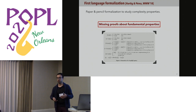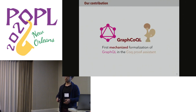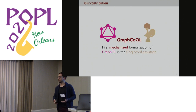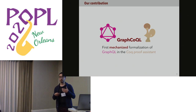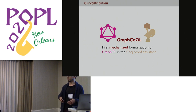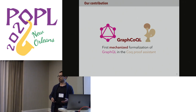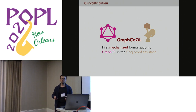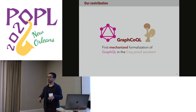So we wanted to address these issues, and we developed the first mechanization of GraphQL in Coq, which we hope can serve as a baseline to study the language formally and to provide support for verification efforts on this language. I will briefly show a little bit of the core of our formalization, and then show a case scenario where we use it.